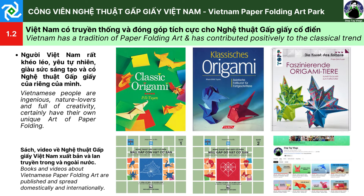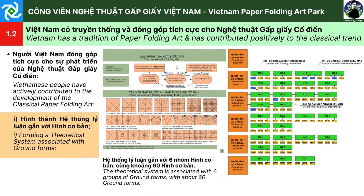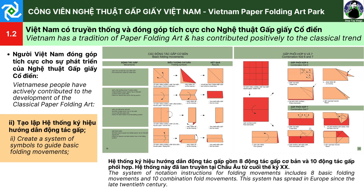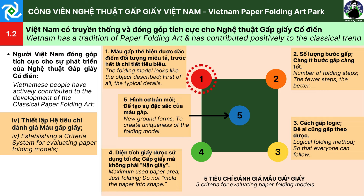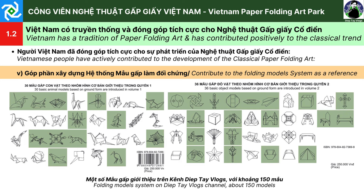1.2. Việt Nam có truyền thống và đóng góp tích cực cho nghệ thuật gấp giấy cổ điển. Người Việt Nam rất khéo léo, yêu tự nhiên, giàu sức sáng tạo và có nghệ thuật gấp giấy của riêng mình. Sách, video về nghệ thuật gấp giấy Việt Nam đã được xuất bản và lan truyền trong và ngoài nước. Người Việt Nam đóng góp tích cực cho sự phát triển của nghệ thuật gấp giấy cổ điển qua: hình thành hệ thống lý luận gắn với hình cơ bản; tạo lập hệ thống ký hiệu hướng dẫn động tác gấp; nhấn mạnh tính biểu tượng của mẫu gấp giấy; thiết lập hệ tiêu chí đánh giá mẫu gấp giấy; và xây dựng hệ thống mẫu gấp làm đối chứng.